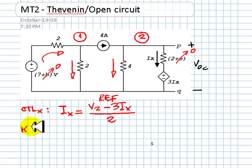And that is your control equation. KCL for node 1. For this one, current going in, 7 minus V1 over 2. And that is equal to the current in this branch, V1 over 2, plus the current in this branch, 4 amps.